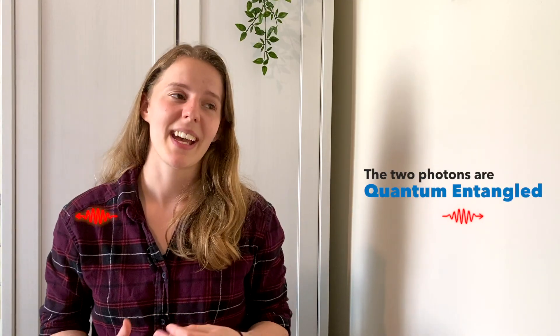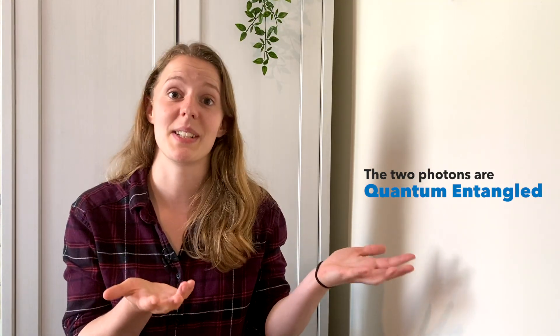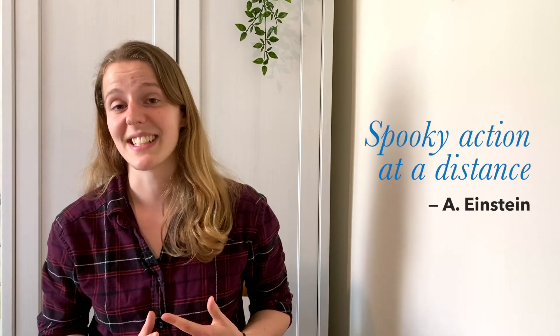Remember that the two PET photons are produced in the same event, when the positron and the electron annihilate with each other. So this means that they are quantum entangled. Anything that happens to one of my photons is going to instantly affect the properties of the other. Einstein called this spooky action at a distance.